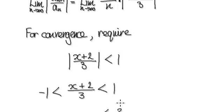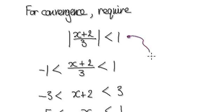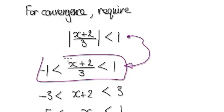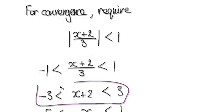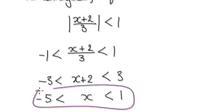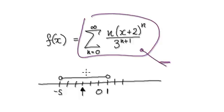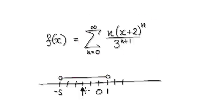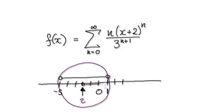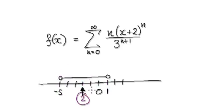The absolute value of something less than one can always be translated to this inequality. So times everything by 3 — that gives you this. Take away 2 — that gives you this. So what we've got is this interval. Anything in this interval will converge for sure. The radius of convergence will be 3, and it's centered at 2.